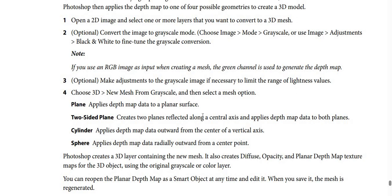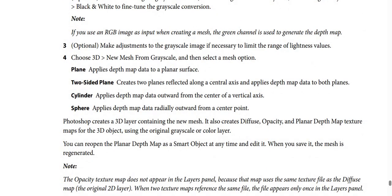Step 1: Open a 2D image, then select one or more layers to convert to a 3D mesh. Step 2: Convert the image to Grayscale mode by choosing Image > Mode > Grayscale, or use Image > Adjustments > Black & White to fine-tune the grayscale conversion. Note: if you use an RGB image as input when creating a mesh, the green channel is used to generate the depth map.